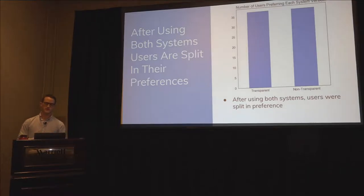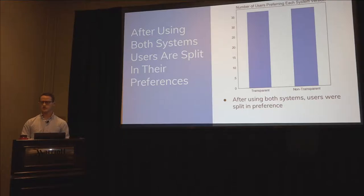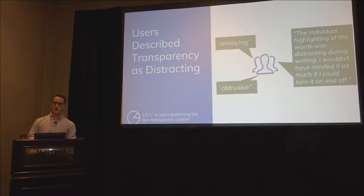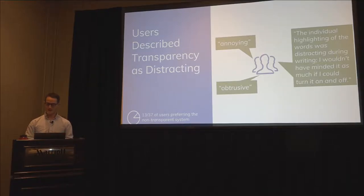But after they actually used the system, users were split in their preferences — almost uncannily, 37 users chose the transparent system and 37 chose the non-transparent system. This was confusing given all the media and big outlets saying they want transparency. So what was going wrong? Users described transparency as distracting. One user said the individual highlighting of words was distracting during writing, and they wouldn't have minded as much if they could turn it on or off. Others called it annoying and obtrusive.